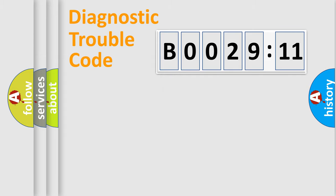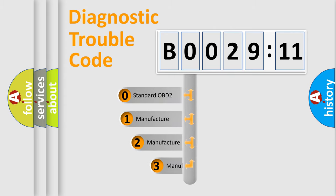Powertrain, Body, Chassis, and Network. This distribution is defined in the first character code.